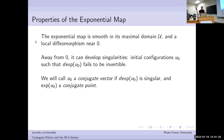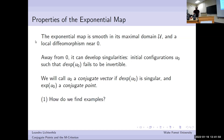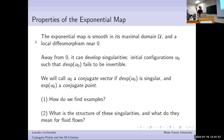I will call those configurations U0 conjugate vectors. In classical Riemannian geometry, everybody talks about conjugate points, but in some ways it's nicer to think of these things living in the tangent space, as opposed to the image of these configurations, which I call conjugate points. So most of the time I'll be talking about conjugate vectors — those initial configurations for which the exponential map fails to be invertible. A basic question is: what are some examples, how do we produce them, what is the structure of these singularities, and what do they mean for fluid flows?